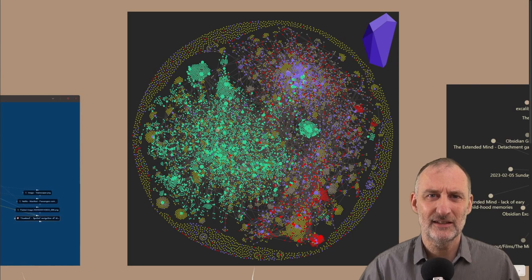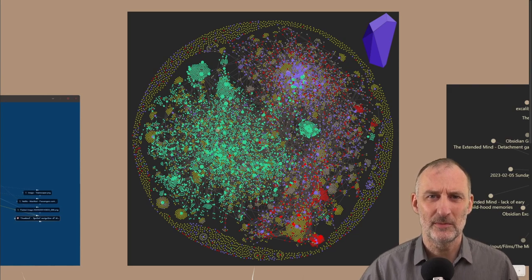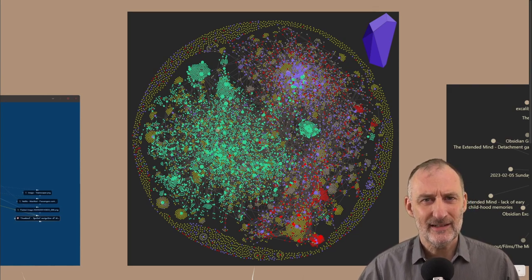So here you can see the different colors. Greens are the notes that I imported from my previous personal knowledge management system called The Brain. Reds are the Excalibrain drawings. And the other colors are the other documents in my vault.